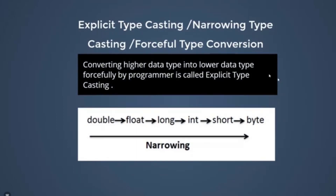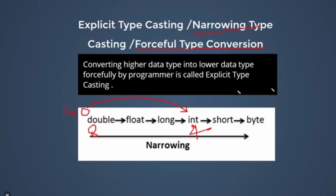Next we have explicit typecasting, also called narrowing typecasting and forceful typecasting. In explicit typecasting, we have to forcefully convert a larger data type to a smaller data type. For example, if you want to convert double data type to integer data type, that is called explicit typecasting. The reason is that double size is 8 and int size is 4. Whenever we convert a higher data type into a lower data type forcefully by the programmer, there is a possibility of data loss. In that case JVM will not do it automatically — the programmer has to do it explicitly.